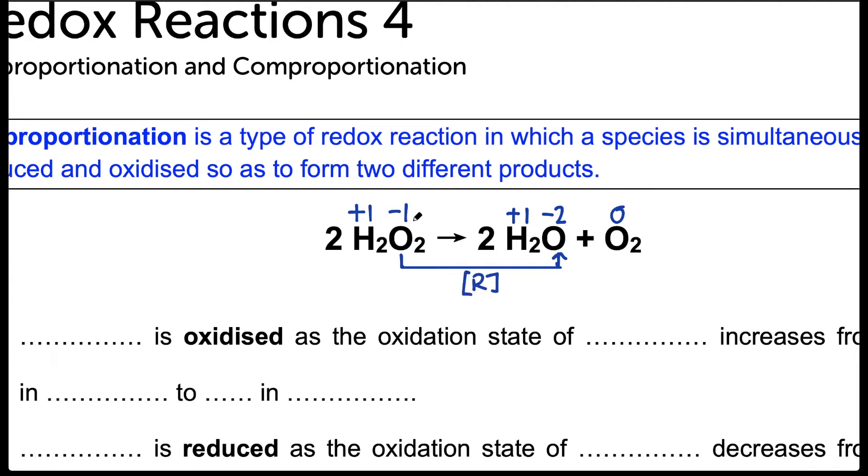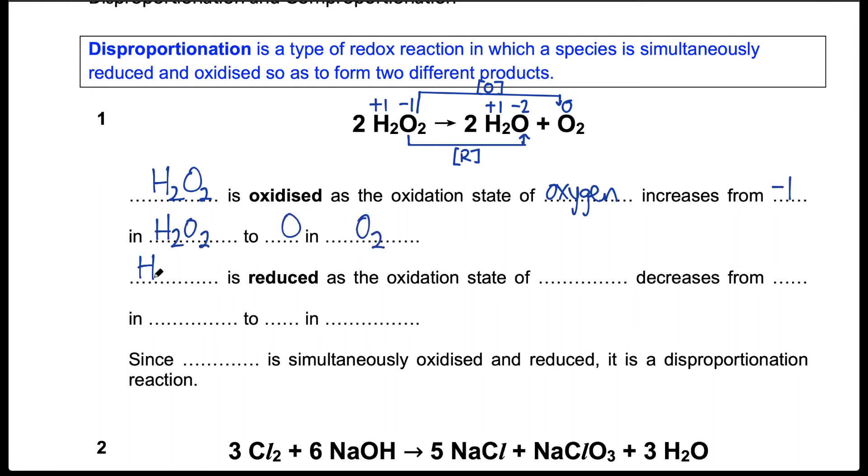At the same time, we realize that the oxidation state of oxygen also increases from minus one in hydrogen peroxide to zero in oxygen. This is oxidation. We find that hydrogen peroxide is both oxidized and reduced at the same time. So this is what we call a disproportionation reaction. Now let's take some time to fill in the blanks.